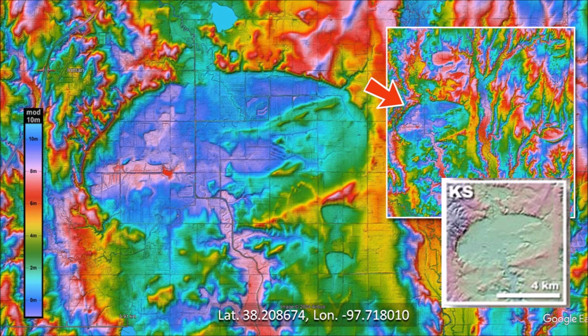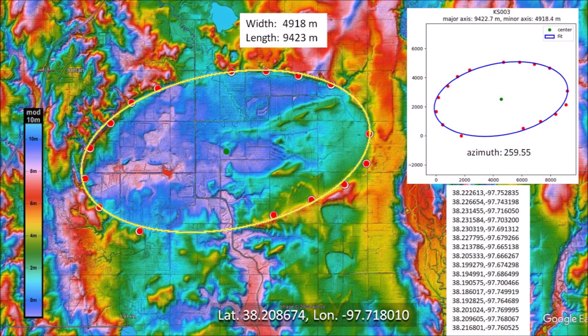This is the Kansas basin illustrated in the 2009 paper by Firestone. The colorized topography and the 20x vertical exaggeration of the Synthos LiDAR show additional features not apparent in the LiDAR image from Firestone. This elliptical basin is enormous — it has a length of 9,423 meters or 5.8 miles. The ellipse has an azimuth of 259.5 degrees. The ice projectile that made this large basin would have had a diameter of 1.9 kilometers and kinetic energy equivalent to 5,900 megatons of TNT.